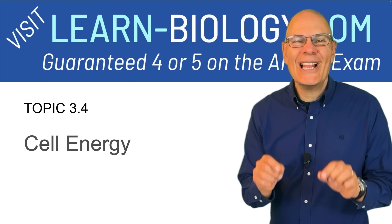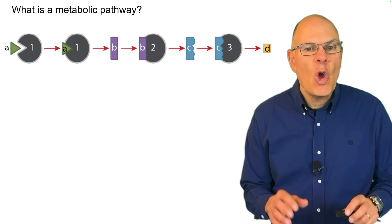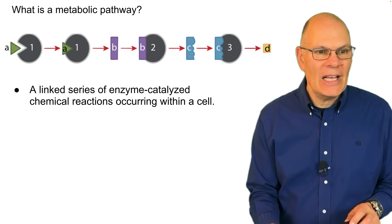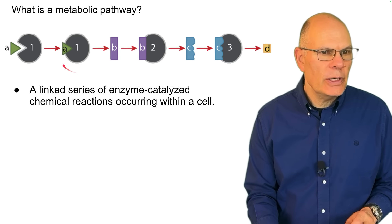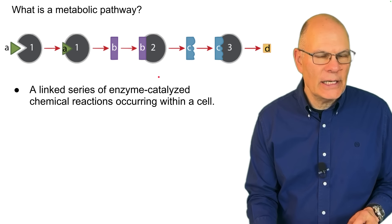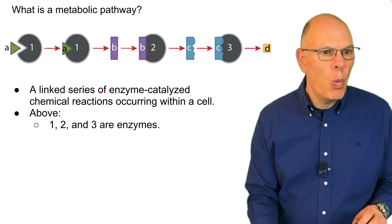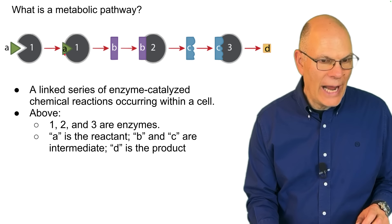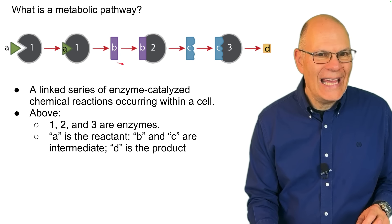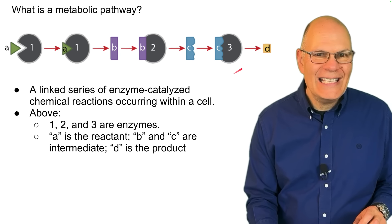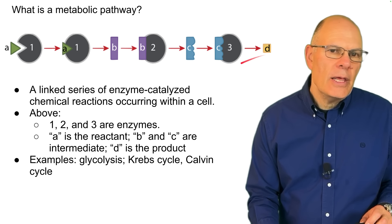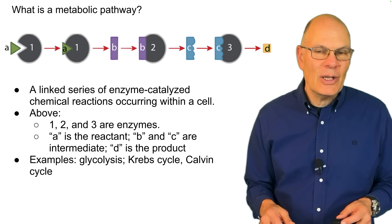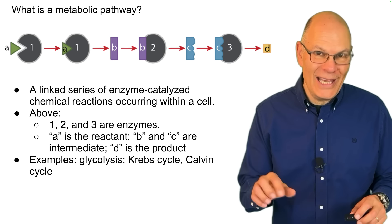Topic 3.4, cell energy. What is a metabolic pathway? A metabolic pathway is a linked series of enzyme-catalyzed chemical reactions occurring within a cell. A is the initial reactant, B and C are intermediates, and D is the final product. Examples include glycolysis, the Krebs cycle, and the Calvin cycle. These reactions can be linear — like glycolysis, which has a beginning and end point — or cyclical, like the Krebs cycle and the Calvin cycle, where the starting compound oxaloacetate is also the ending compound.